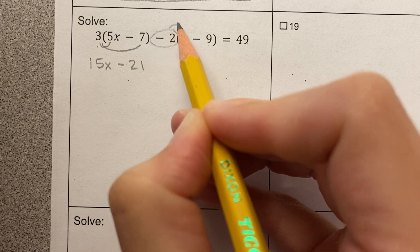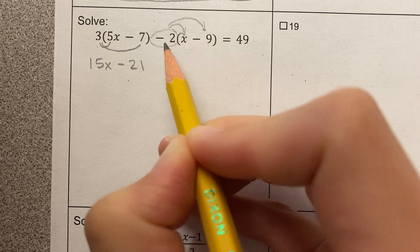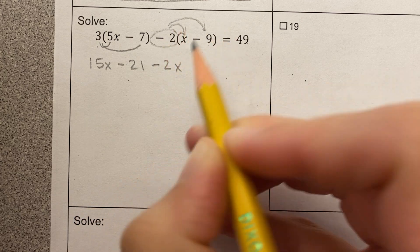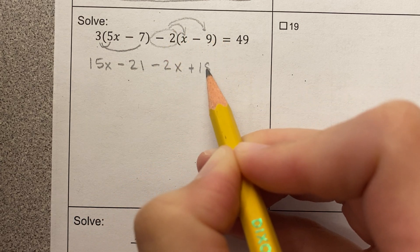Now I'm going to distribute this. I'm distributing negative 2 this time, so negative 2 times x, that's negative 2x. Negative 2 times negative 9, that's positive 18.